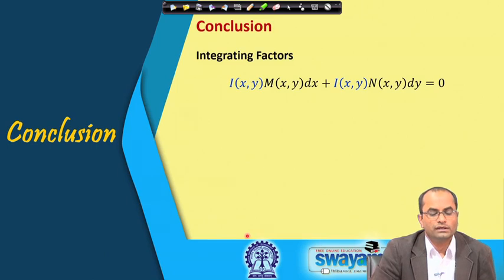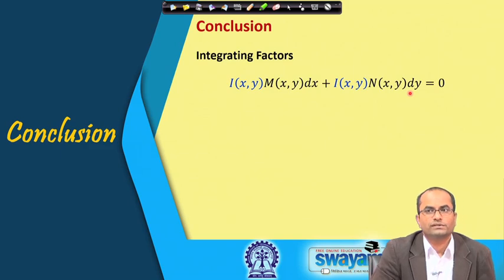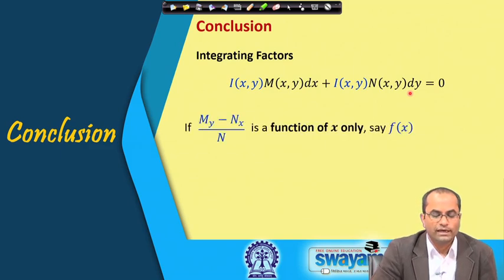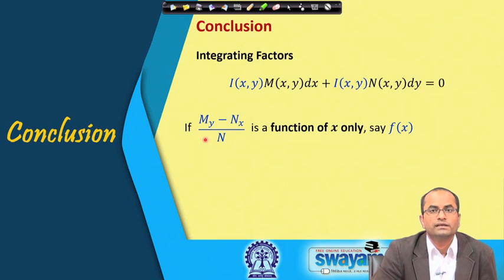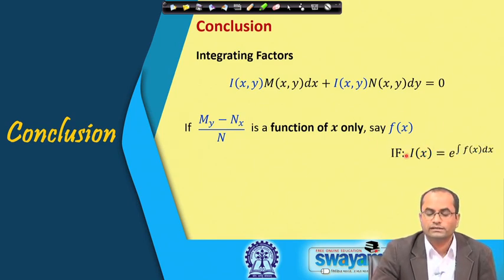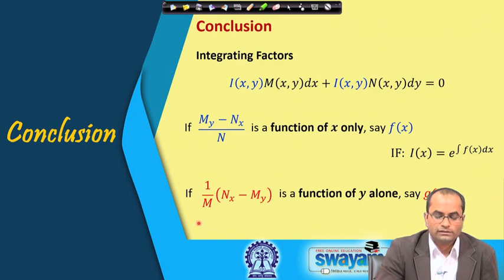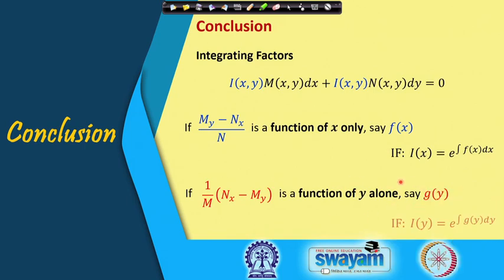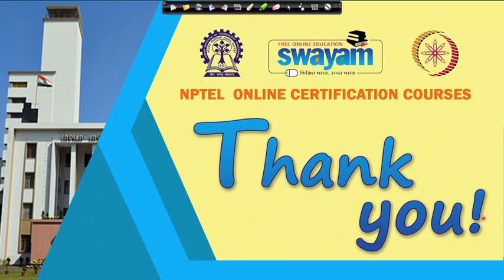In conclusion: an integrating factor is a function that, when multiplied to a non-exact differential equation, makes it exact. The two key special cases derived are: (1) if (M_y − N_x)/N = f(x) depends only on x, then i(x) = e^(∫f(x)dx); and (2) if (N_x − M_y)/M = g(y) depends only on y, then i(y) = e^(∫g(y)dy). These are the references used, and thank you for your attention.